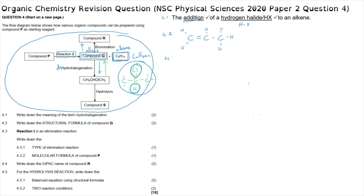Question 4.3 states that reaction one is an elimination reaction and asks us to write down the type of elimination reaction. As we've suggested, compound P must have been broken apart to form an alkene and an alkane. The only type of elimination reaction that can produce this is a cracking reaction — cracking is where we start with one long chain and break it up into either two short-chain alkenes and hydrogen, or one alkane and one alkene.